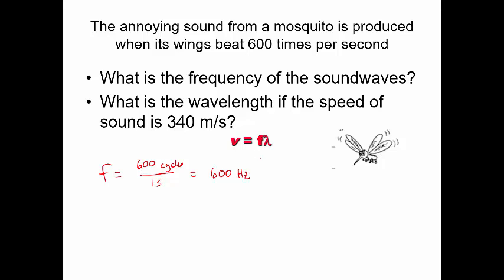Now, what is the wavelength if the speed of sound is 340 meters per second — the speed of sound in air? This is much slower than the speed of light, which is 3 × 10⁸ m/s. That's why we see a flash of lightning and then hear the thunder. We have our velocity and frequency, and we want to find the wavelength.